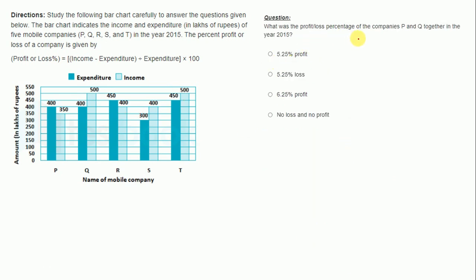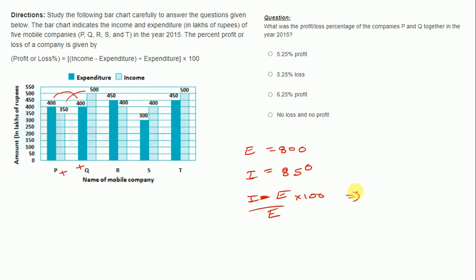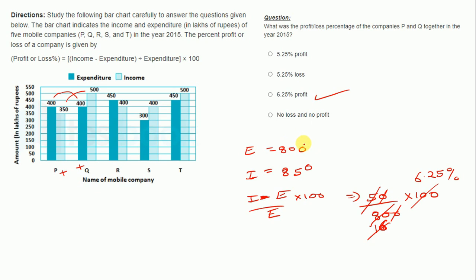Now, what was the profit or loss percentage of companies P and Q together in the year 2015? For P and Q, the total expenditure is 400 + 400 = 800, and the total income is 350 + 500 = 850. Applying the formula: (I minus E) / E × 100 = 50 / 800 × 100 = 6.25% profit, since income is more than expenditure.